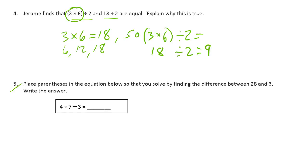Number 5, place parentheses in the equation below so that you can solve by finding the difference between 28 and 3 and write the answer. So we want to put parentheses around this so we get 28 minus 3 out of it. Well, let's just try parentheses around the first 2, 4 times 7, that's 28. So times 7 minus 3, 28. The difference between 28 and 3 is 28 minus 3, and 28 minus 3 equals 25, and there, wrote the answer.